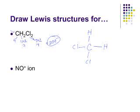Since the chlorines don't yet have a full octet and we haven't placed all our electrons, we add lone pairs to each chlorine. Counting all electrons — two, four, six, eight, ten, twelve, fourteen, sixteen, eighteen, twenty — all 20 electrons are present. Carbon has an octet, each chlorine has an octet, and the hydrogens are satisfied. This is a correct Lewis structure for CH₂Cl₂.